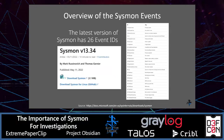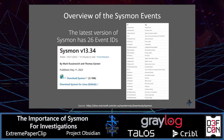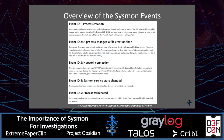The latest version of Sysmon has 26 event IDs. It's version 13.34, released in May of 2022. Also note there is now a version for Linux — this is a recent addition. I'm not going to cover it in this talk, but it's something you should check out.